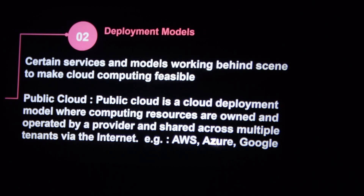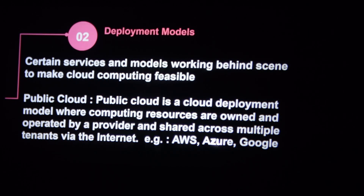A public cloud is operated and owned by a provider and is shared across multiple tenants via the internet. For example, if I have a picture and I upload it, and Amazon AWS, Azure, or Google hosts it, you can use the internet to access your picture and download it — just like images you put in WhatsApp that come back when you change your phone. A public cloud is shared across multiple locations, not just a single location.